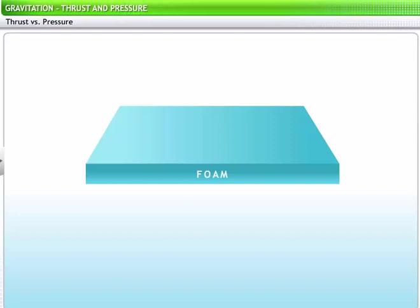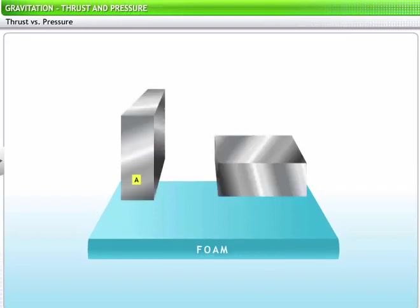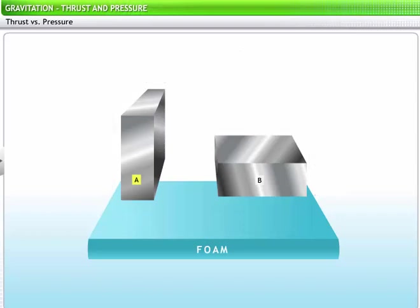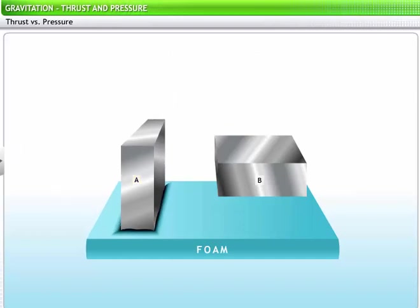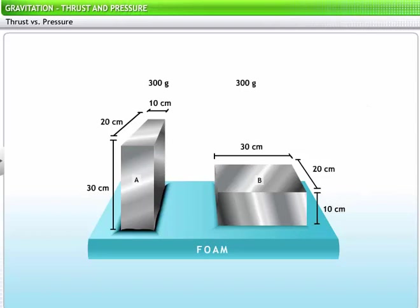Another example will help illustrate further the distinction between thrust and pressure exerted by a body. Take a piece of foam and two identical metal blocks, A and B, weighing 300 grams. The length, breadth, and thickness of these blocks are 30, 20, and 10 centimeters respectively. Place the metal block A vertically on the foam and the other iron block B horizontally. Now let's compare the compression of the foam where blocks A and B are placed. The foam shows more compression where the metal block A is positioned vertically.